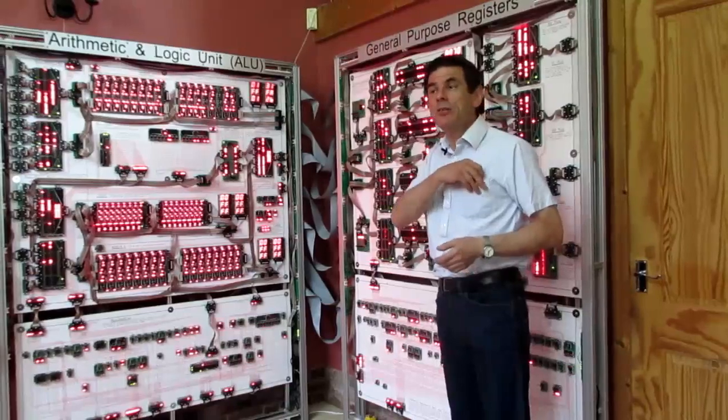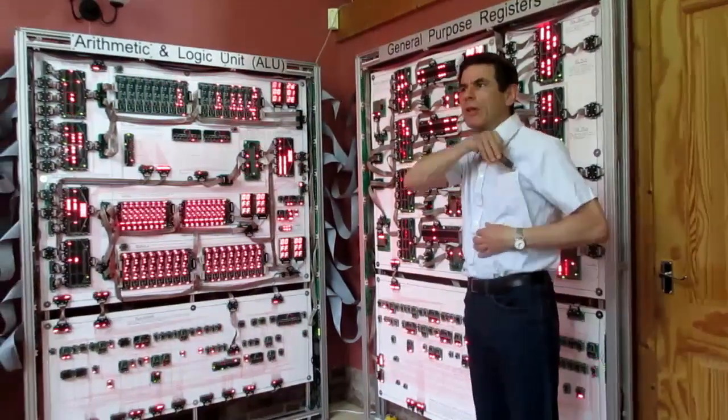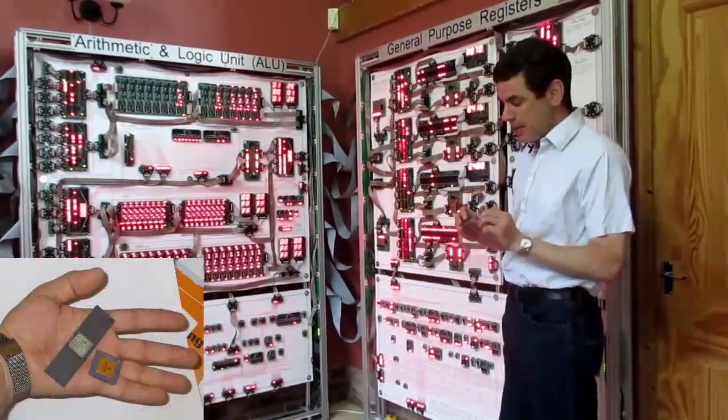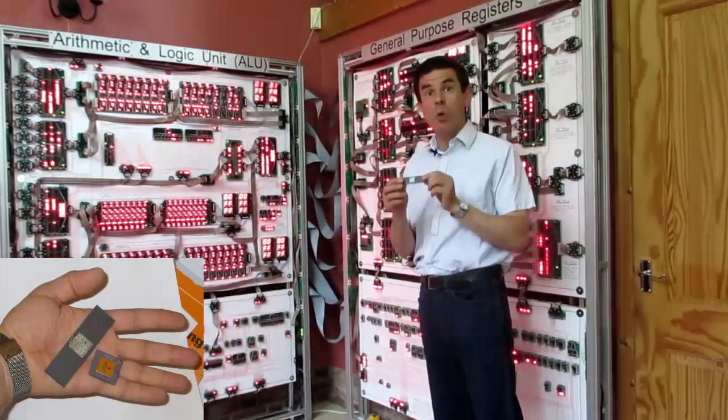So the megaprocessor is a processor like this one from the old days. These things are made out of lots of transistors, but very small ones.